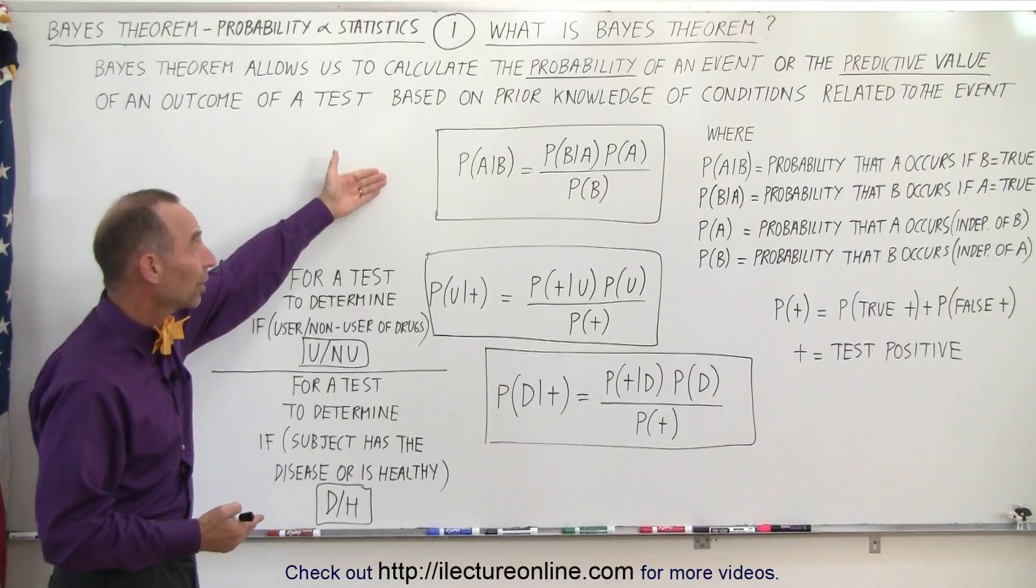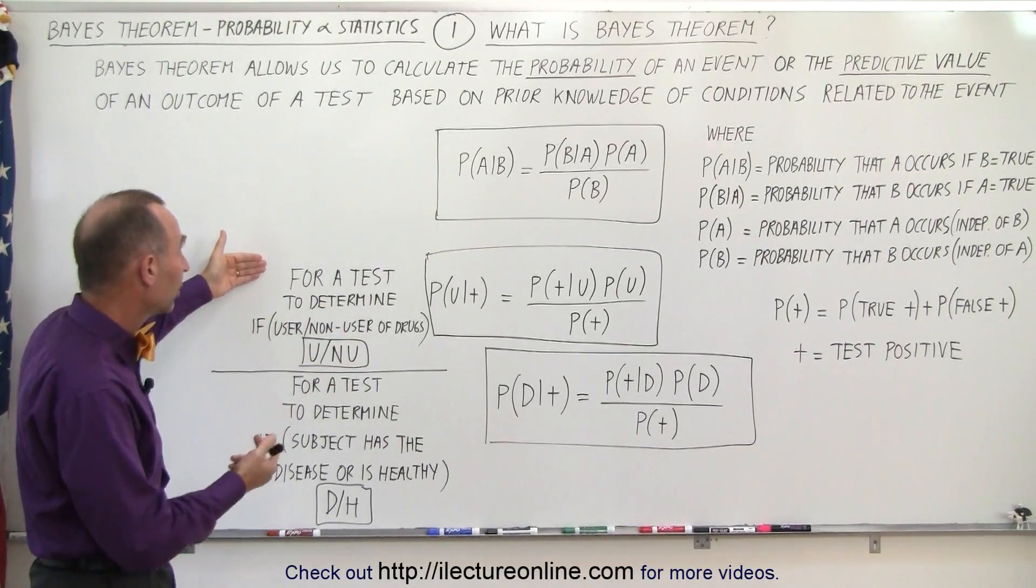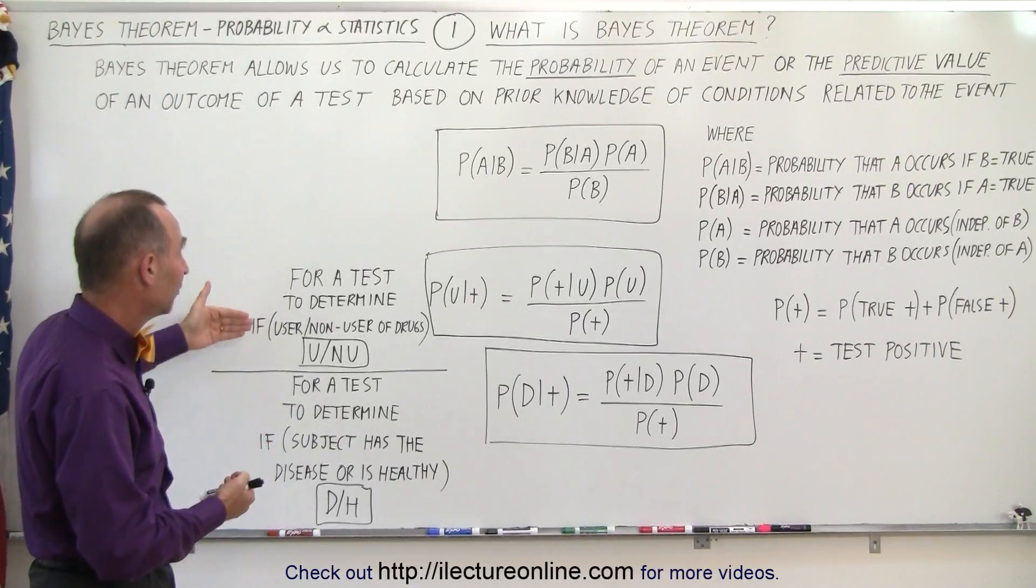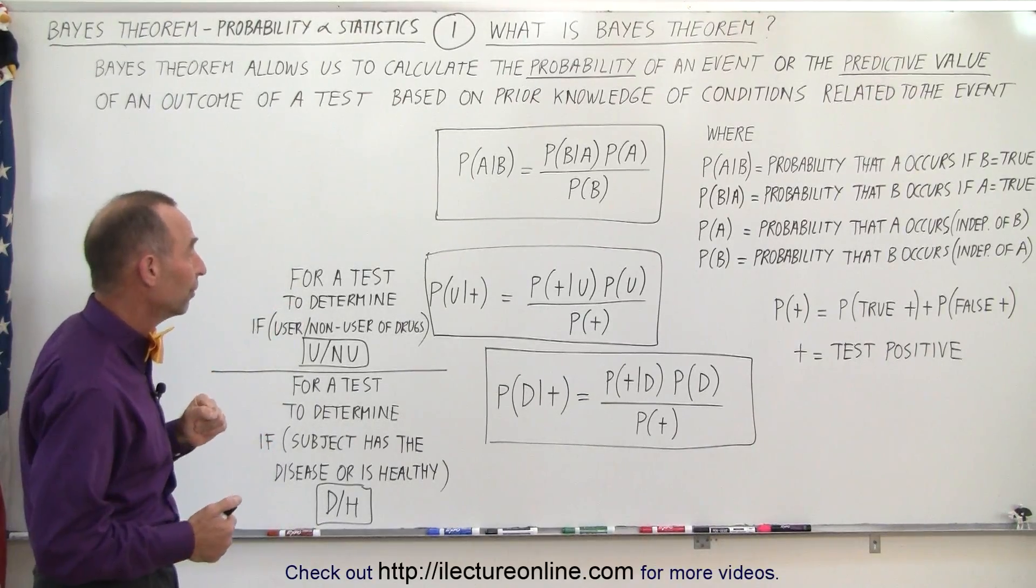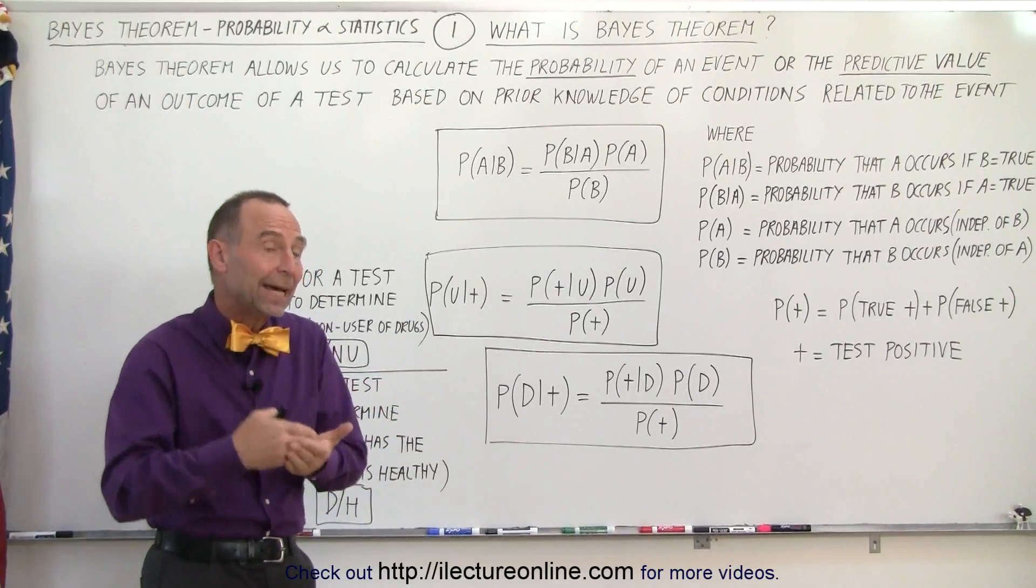So if we take the same theorem, Bayes' Theorem, and write it under those conditions, let's first take a look at what it would look like for a test to determine if the subject is a user or a non-user. So we can say that we run a test. The test can be positive or the test can be negative.